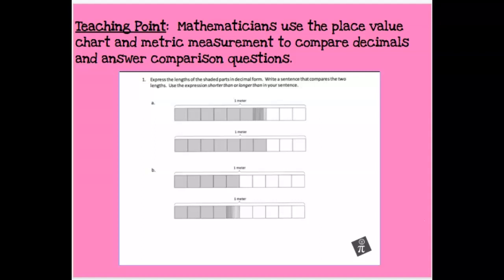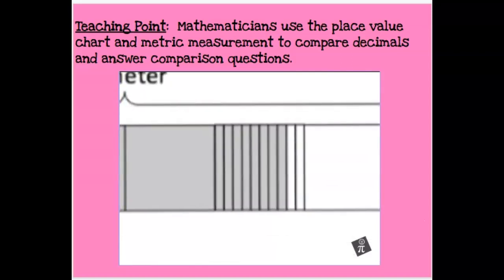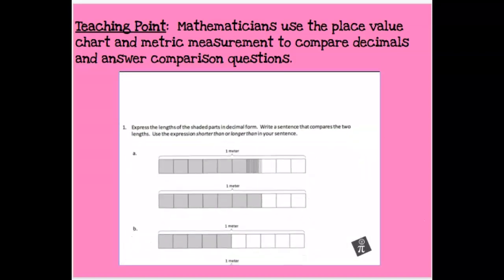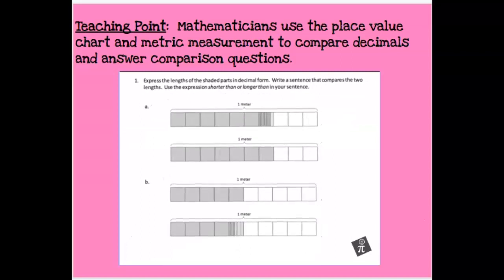Here's an example from Eureka Math where we use tape diagrams to identify decimals, showing relative lengths to allow comparison. Looking at the first one: 1, 2, 3, 4, 5, 6 — that's six tenths. But then we need to zoom in, and we have 1, 2, 3, 4, 5, 6, 7, 8 — eight hundredths. So what we've got is six tenths plus eight hundredths, which is 0.68. That's our value for this one.